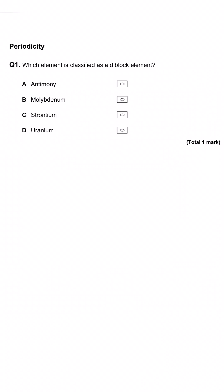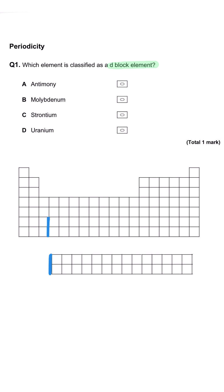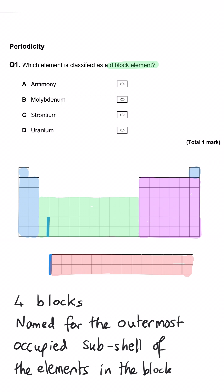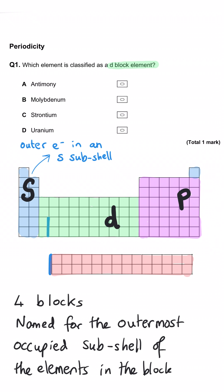Which element is classified as a D block element? Each region of the periodic table is called a block. There are four blocks and the blocks take their name from the outer occupied subshell that each element has in that region. The elements of group 1 and group 2 have their outer occupied subshell as an S subshell, so that is known as the S block. Then we've got the D block, the P block and the F block. So all that we're doing in this question is looking for the element which is in the middle region that is coloured in green for the D block.